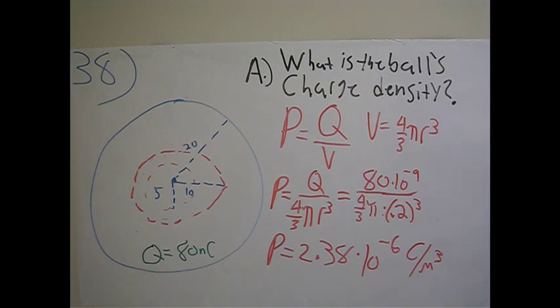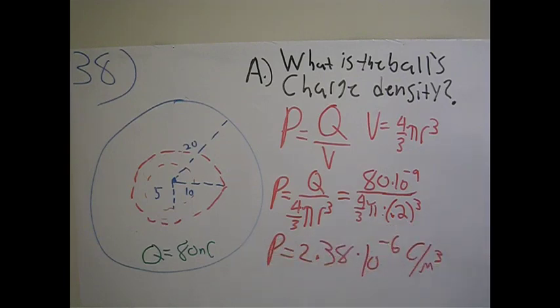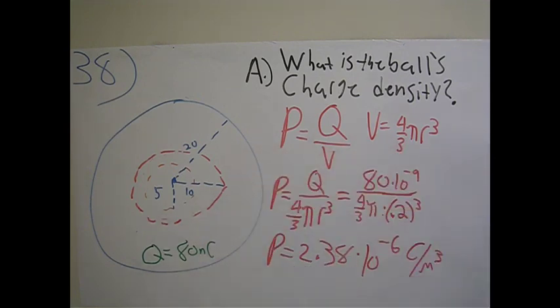We know the value of Q because it's given in the figure where it equals 80 nanocoulombs. So substitute, and this distance r is given as 20 centimeters, which we will convert to 0.2 meters.